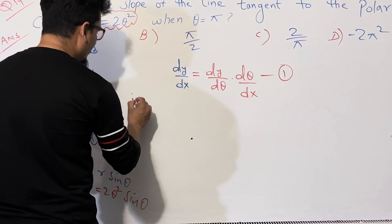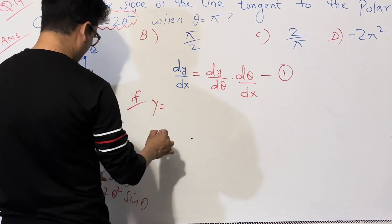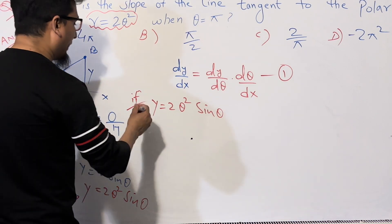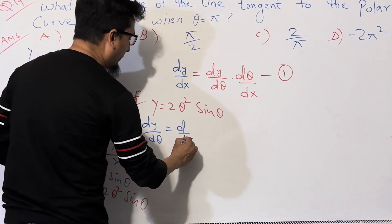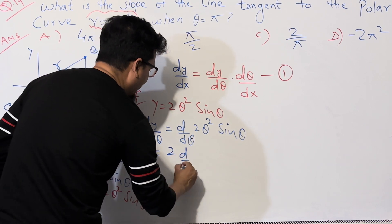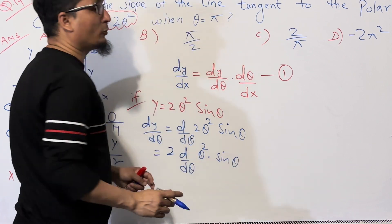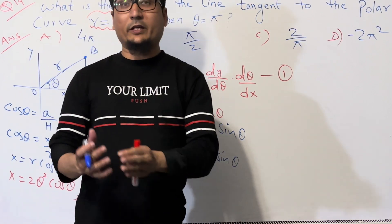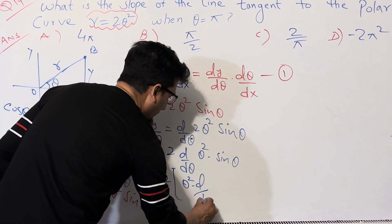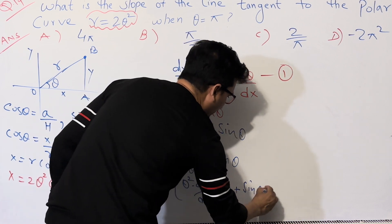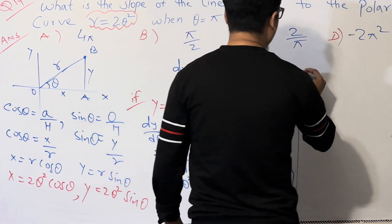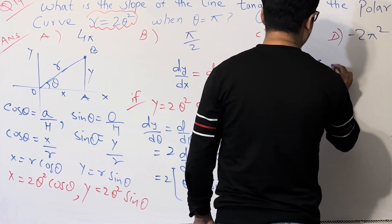We need dy/dθ, where y = 2θ² sin θ. Differentiating with respect to θ: dy/dθ = 2 · d/dθ(θ² sin θ). We have two functions — an algebraic function θ² and a trigonometric function sin θ — so we use the product rule: 2[θ² · d/dθ(sin θ) + sin θ · d/dθ(θ²)].